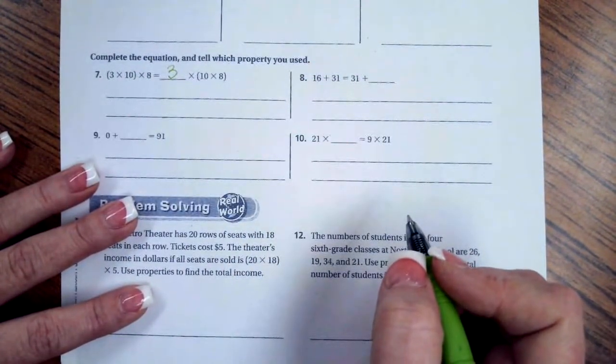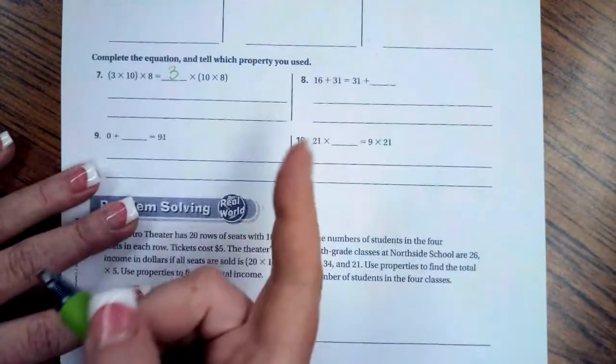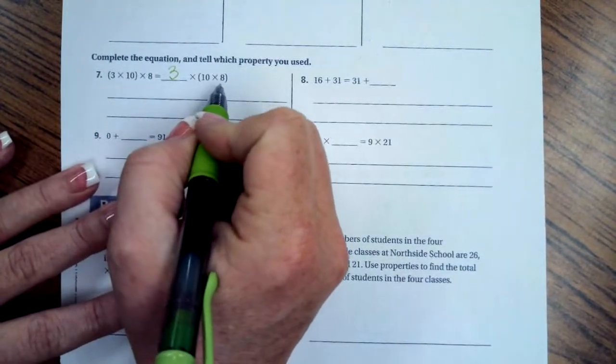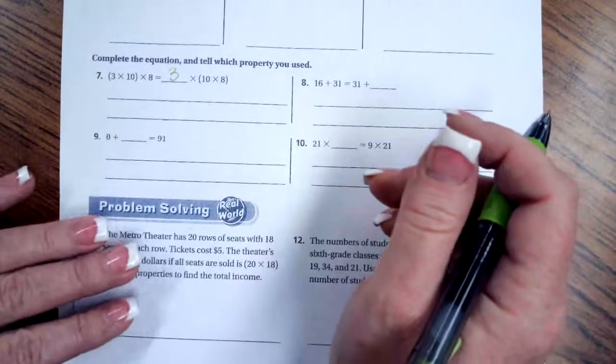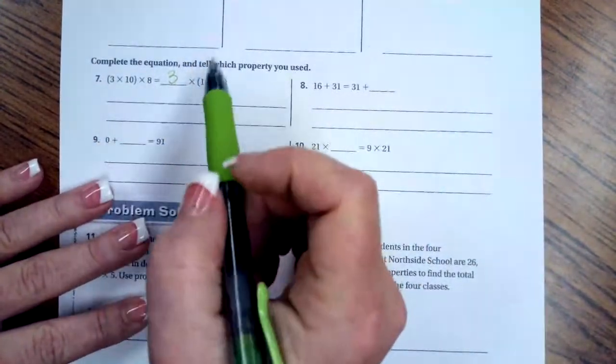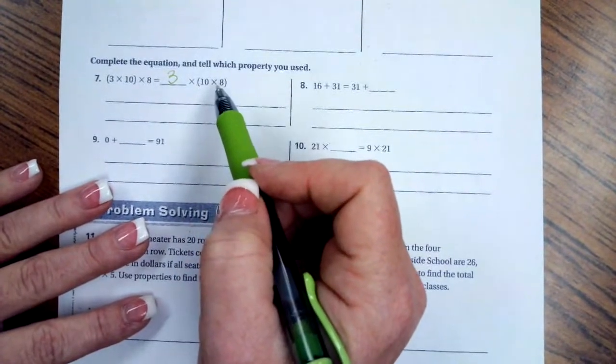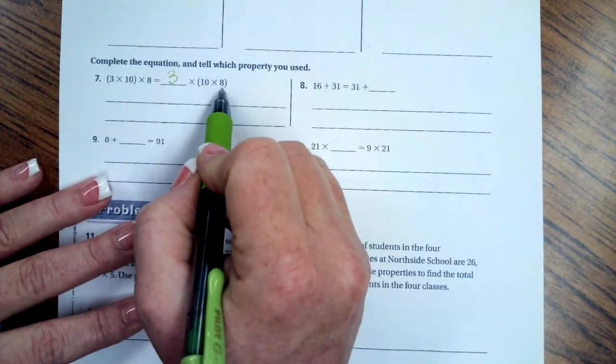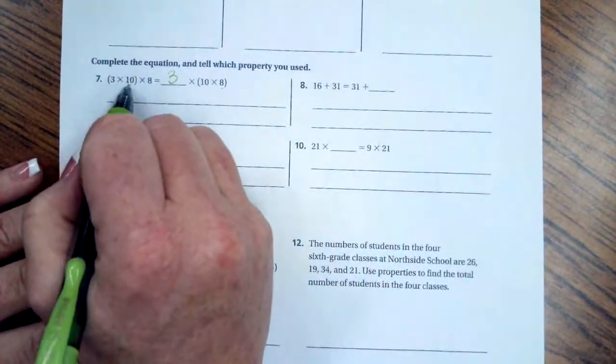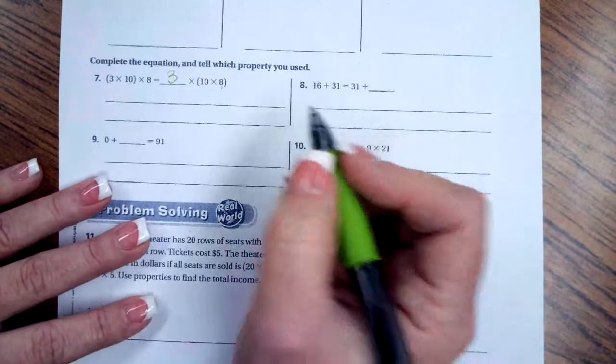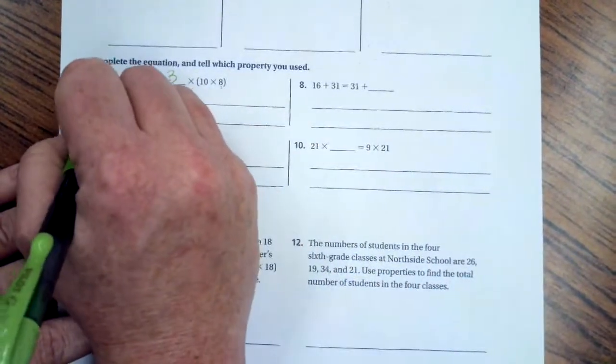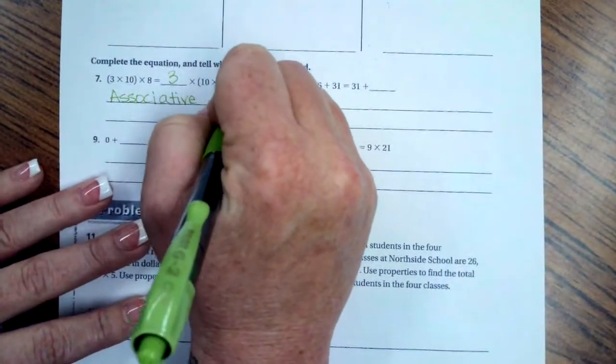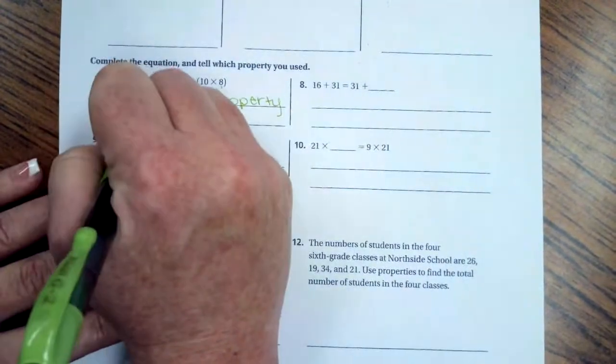Now, the properties are the associative, which is what this guy is, because we have the same numbers and they're even in the same order, but the parentheses have moved. So here's how I remember my properties. Associative property is who you associate with. So today, the 10 wanted to associate with the 3. Tomorrow, the 10 wanted to associate with the 8. So today, the 3 is its friend. Tomorrow, the 8 is its friend. So it's who you associate with. So that is the associative property of multiplication.